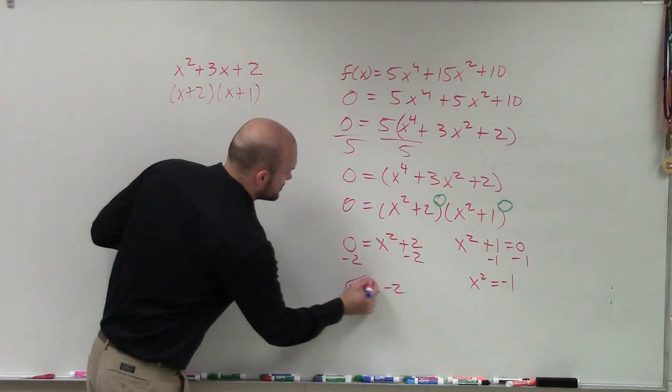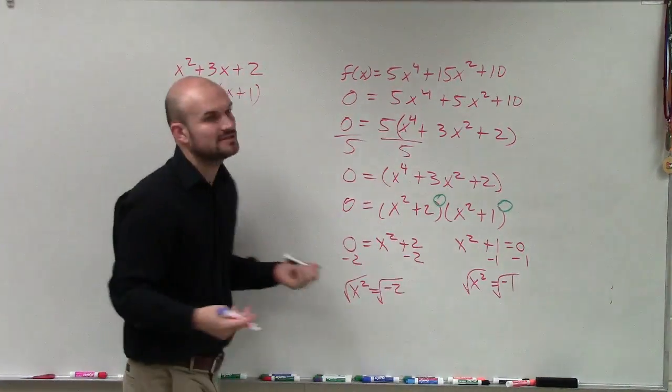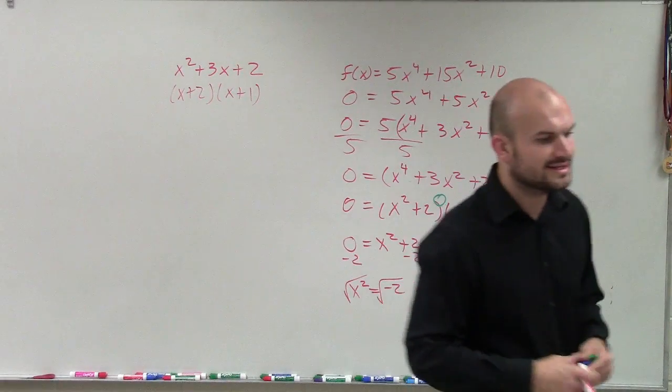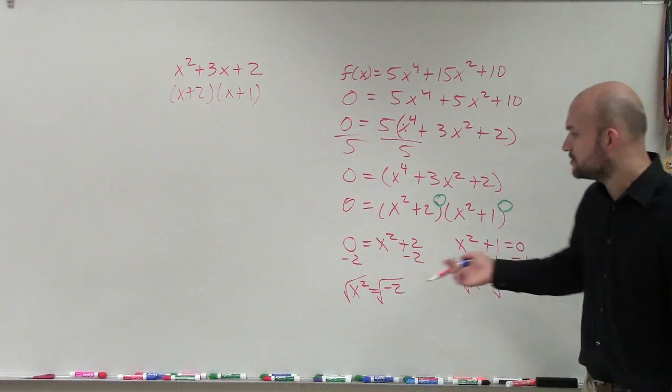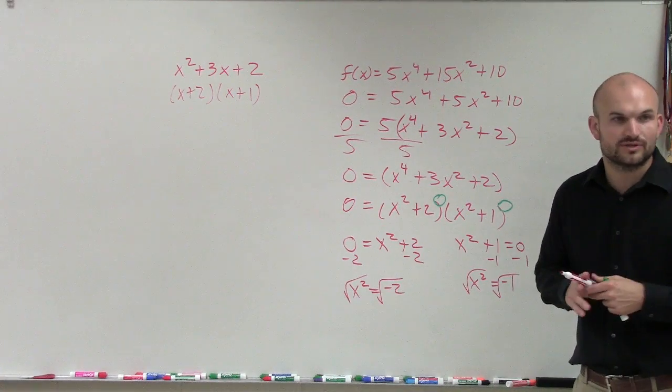And then to solve, you take the square root of both sides. Now, we haven't talked about complex numbers. We're going to do that today. So most of you should have got to this and said, oh, you can't take the square root of a negative number, no real zeros.